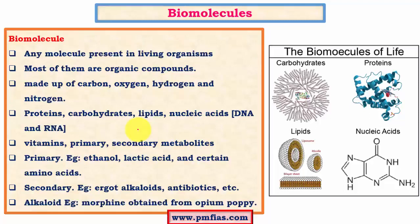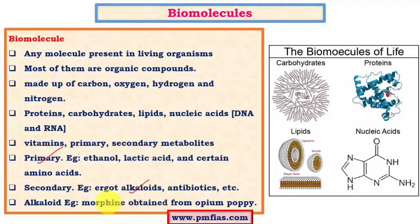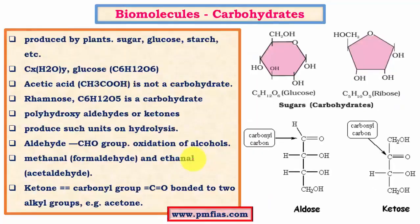Without vitamins, we have many deficiency diseases associated with insufficient amounts of vitamins in our body. There are primary metabolites like ethanol and lactic acid, which are essential — without these the animal might die. There are also secondary metabolites which are not so essential, but without them the animal can undergo impairments or deficiency diseases. Examples of secondary metabolites are alkaloids and antibiotics. Morphine, obtained from opium poppy, is an example of an alkaloid.